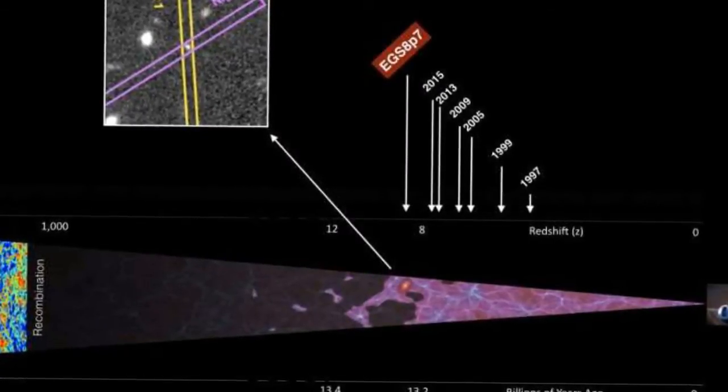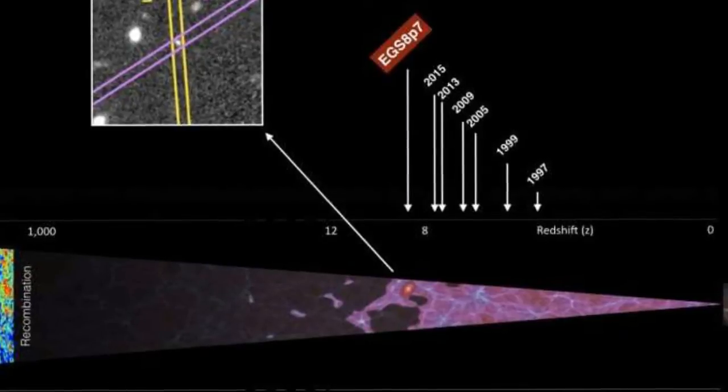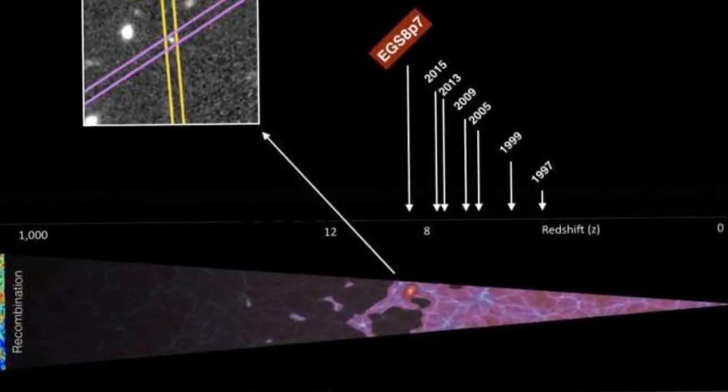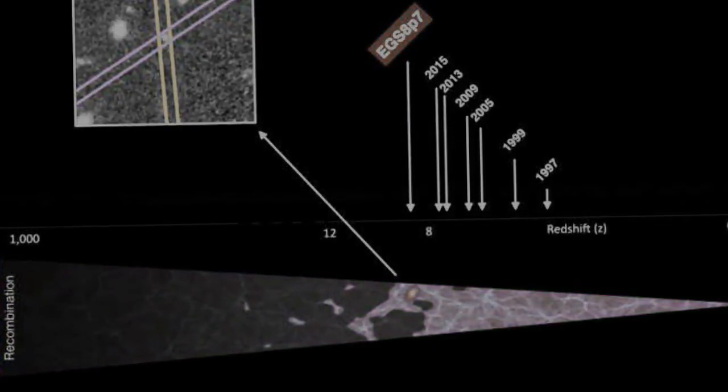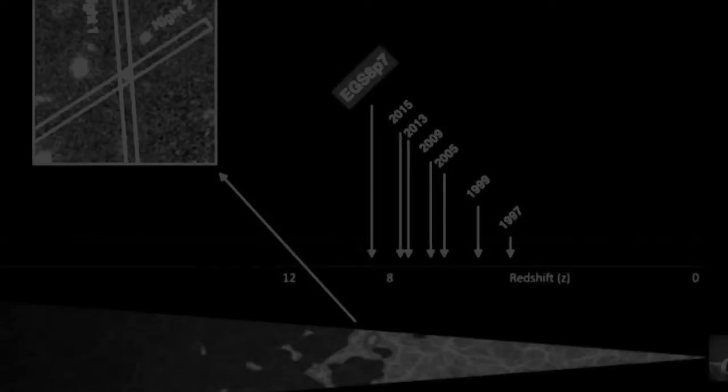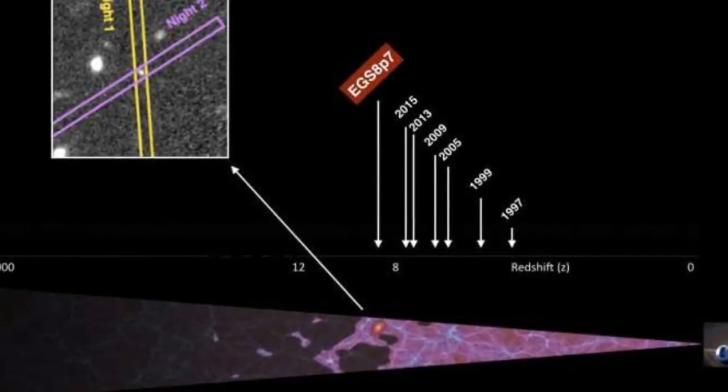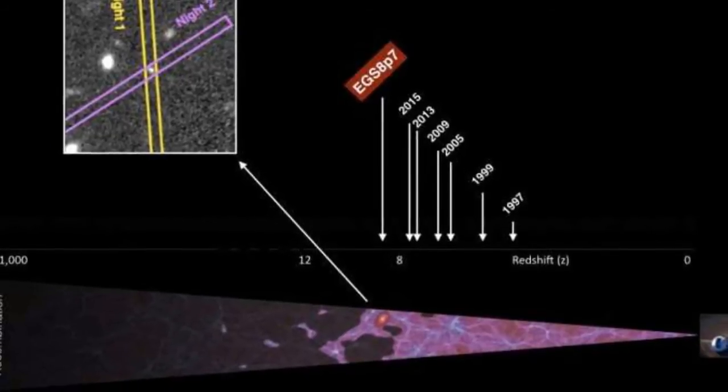Using Keck Observatory's powerful infrared spectrograph called MOSFIRE, the team dated the galaxy by detecting its Lyman-alpha emission line, a signature of hot hydrogen gas heated by strong ultraviolet emission from newly born stars.